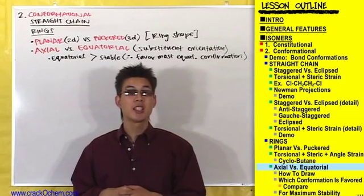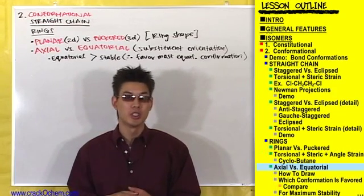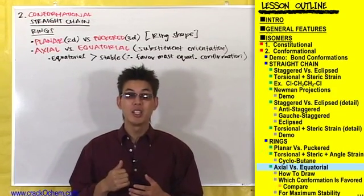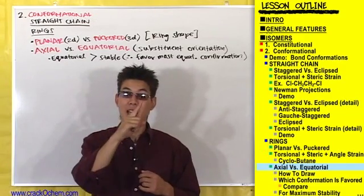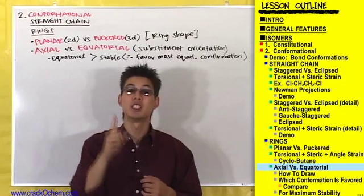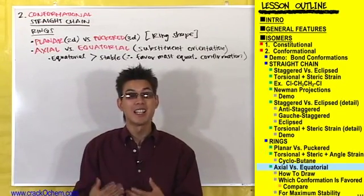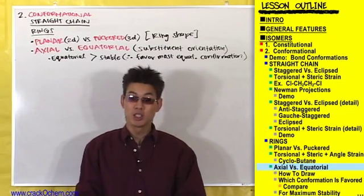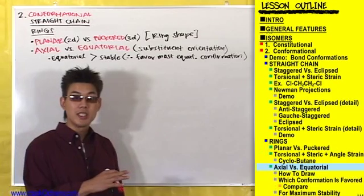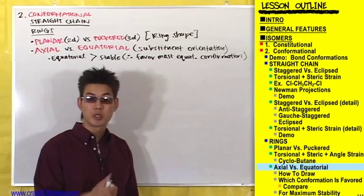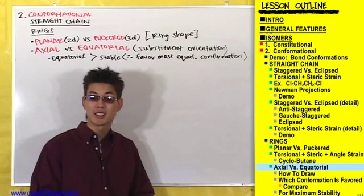There are two ways a substituent can stick off of a ring: it can either be axial or equatorial. If a substituent is axial, it will stick straight up or straight down — not diagonally — as if it were on a vertical axis. That's why we call them axial. We're going to be dealing with axial and equatorial substituents in terms of six-carbon rings, also known as cyclohexane.